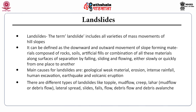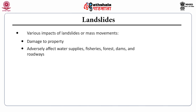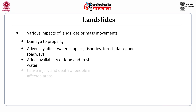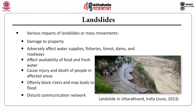There are different types of landslides like topple, mudflow, creep, lahar, lateral spread, slides, falls, flow, debris flow and debris avalanches. Various impacts of landslides include mass movement, damage to property, adverse effects on water supplies, fisheries, forests, dams and roadways, affecting availability of food and fresh water, causing injury and death of people in affected areas, and often blocking rivers which may lead to floods and disturbed communication networks. This diagram shows the landslide in Uttarakhand, India in June 2013.